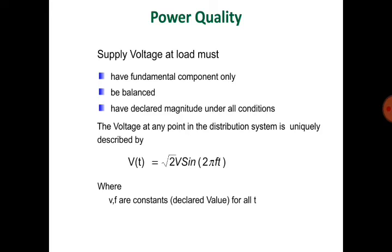For power quality, the supply voltage at the load must have the fundamental component only, be balanced, and have declared magnitude under all conditions. The voltage at any point in the distribution system is uniquely described by v(t) = Vm·sin(ωt), which means √2 × V × sin(2πft).